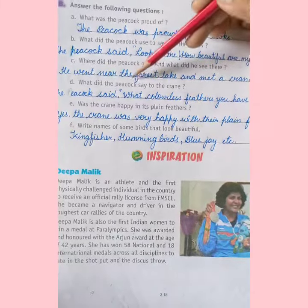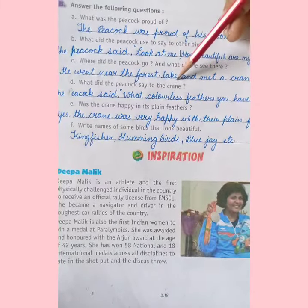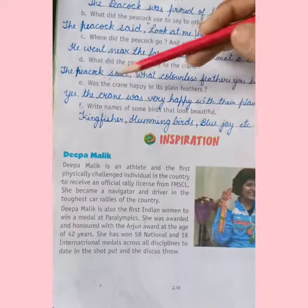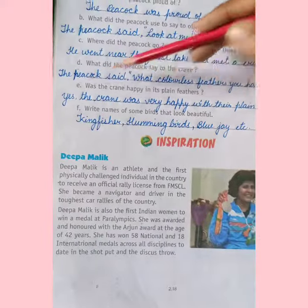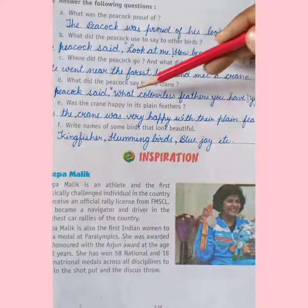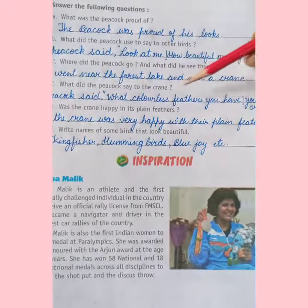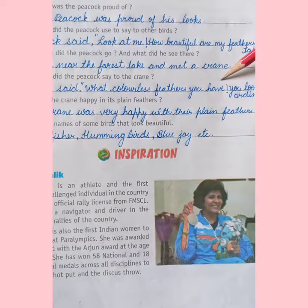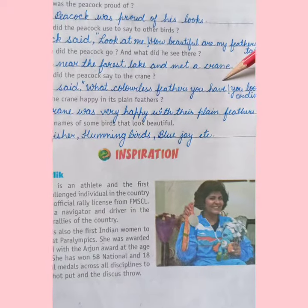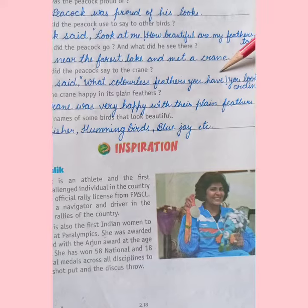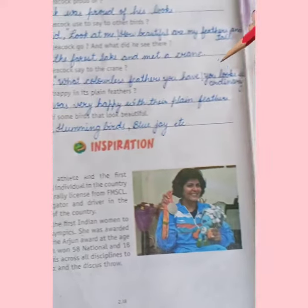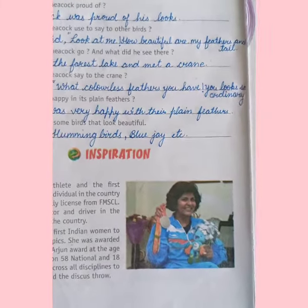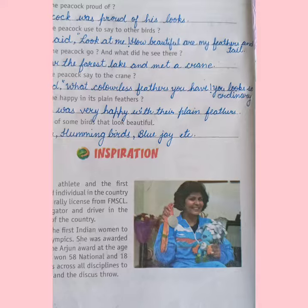What did the peacock say to the crane? Peacock nai crane se kya kaha? The peacock said: What colorless feathers you have! Tumhari jo feathers hain, unhmein bilkul bhi color nahi hai. You look so ordinary — tum bilkul sadharan se lagtay ho.